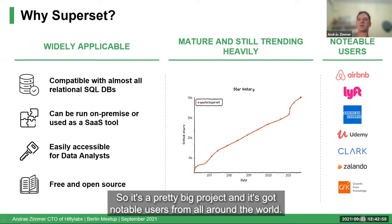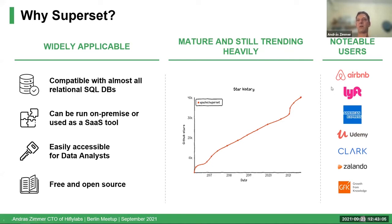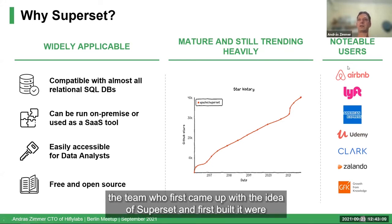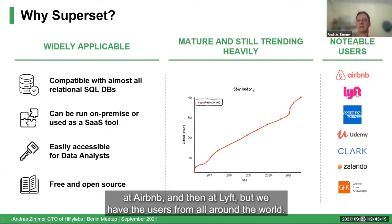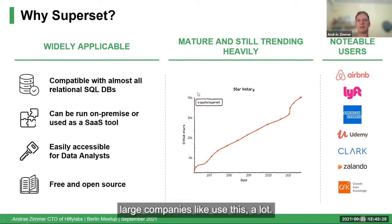It has notable users from all around the world. Airbnb and Lyft are big users because the team who first built Superset were at Airbnb and then at Lyft. But there are users from all around the world — for example, Zalando — and both small and large companies alike use it a lot.